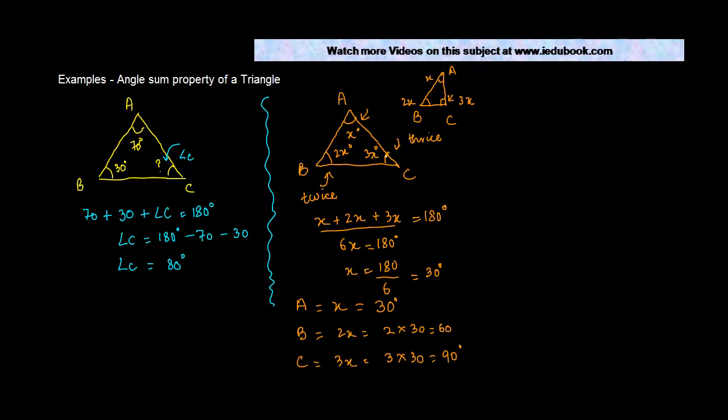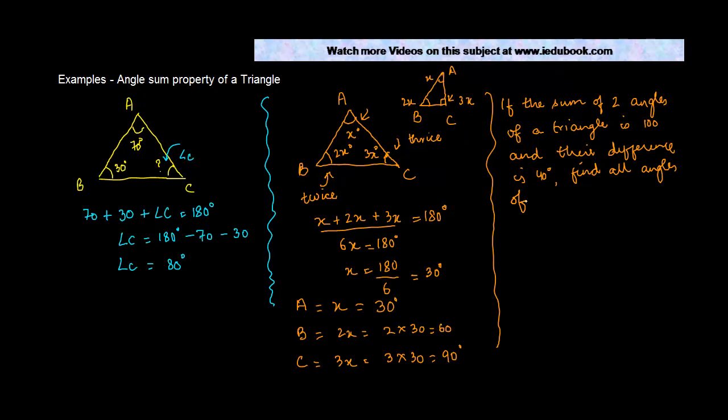Let us take one more example here. If the sum of two angles of a triangle is 100 and their difference is 40 degrees, find all angles of the triangle.